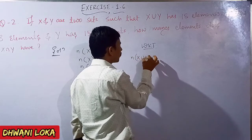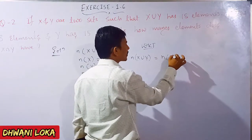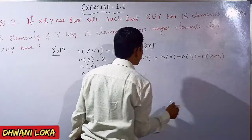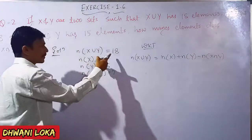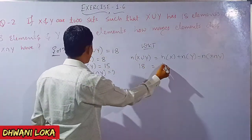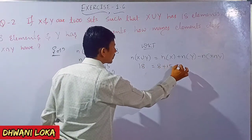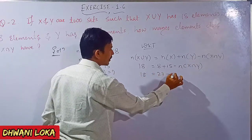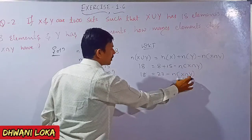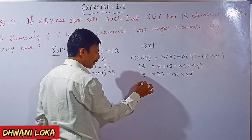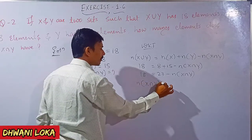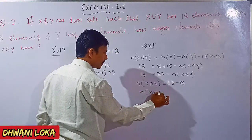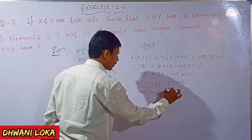Using the formula: N of X union Y is equal to N of X plus N of Y minus N of X intersection Y. Substituting: 18 is equal to 8 plus 15 minus N of X intersection Y. So 18 is equal to 23 minus N of X intersection Y. Therefore, N of X intersection Y is equal to 23 minus 18, which equals 5.